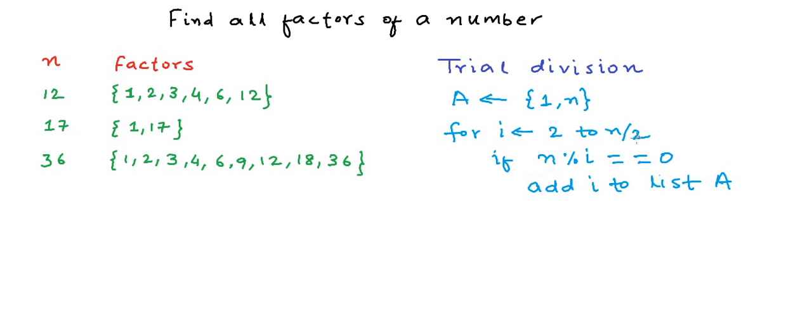Now, what will be the running time of this algorithm? We have a loop running till n by 2. So the time taken is proportional to n, which in other words we also say is O(n) in terms of time complexity. Can we do something better than this? Well, let's see.